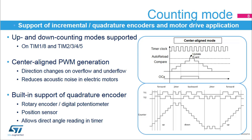Some STM32 timers feature up and down counting modes: the advanced control timers 1 and 8, and the general purpose timers 2, 3, 4, and 5. The counting direction can be programmed by software or automatically managed by the timer in center-aligned PWM mode. In this mode, the counting direction changes automatically on counter overflow and underflow. For a given PWM switching frequency, this mode reduces acoustic noise by doubling the effective current ripple frequency, providing the optimum tradeoff between switching losses and noise.